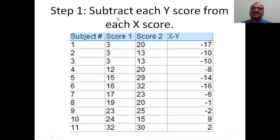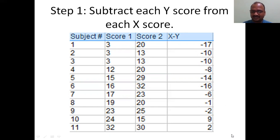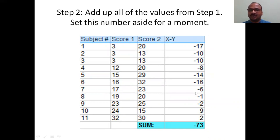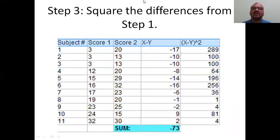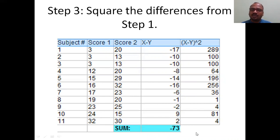First, you calculate x minus y — this is x and this is y. For example: 17 minus 10, 10 minus 8, and so on. Next, sum up all these differences. You get a total of minus 70. Then calculate x minus y whole square. For example, 17 squared, 10 squared, 10 squared. Note: there is no issue with negatives here because minus times minus is plus, and plus times plus is plus.